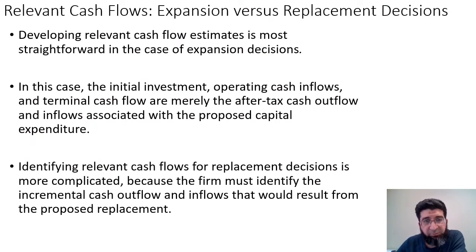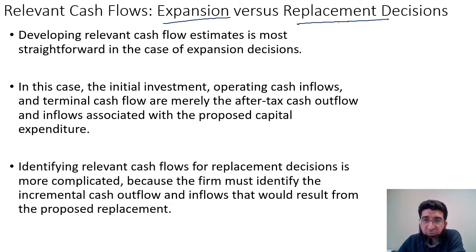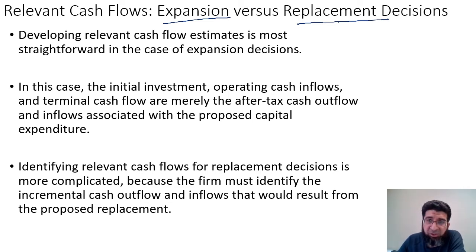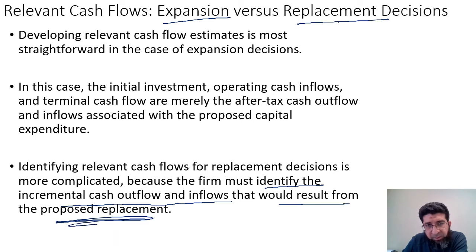Now let's look at definitions relevant to capital budgeting. Expansion decisions are straightforward: there is an initial investment, operating cash flows, and terminal cash flows. Replacement decisions are more complex because we are replacing an existing machine with a new one. The existing machine must be sold and a new one purchased, so there is cash flow coming from the replacement that helps finance the new asset. This requires identifying the incremental cash outflows and inflows resulting from the proposed replacement.